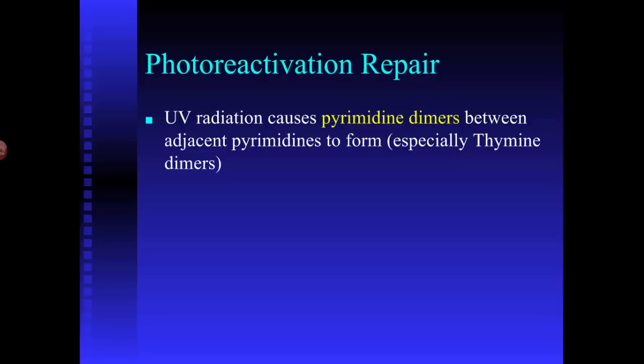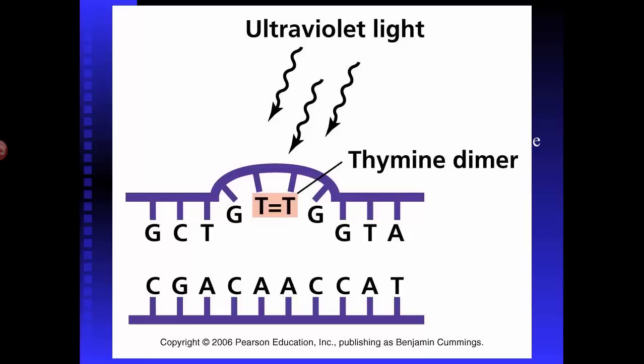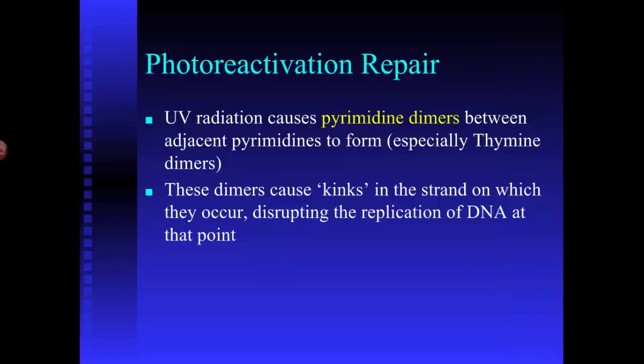When ionizing radiation acts on pyrimidines — the one-ring bases — that are next to each other, removing electrons can cause them to bond to each other in order to become stable again. This is called a pyrimidine dimer — dimer means two units put together. Especially thymines will do this. This can cause kinks in the strand of DNA, which can actually stop DNA replication at that point, and if the DNA doesn't replicate, the cell will die.